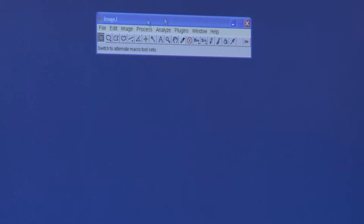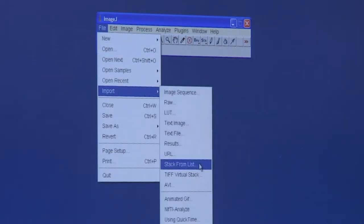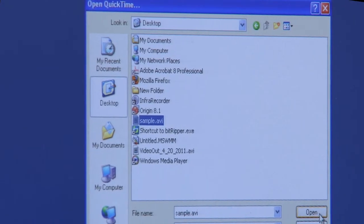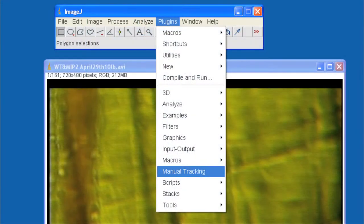To import the movie, open ImageJ again. Click File, Import, using QuickTime Movies plugin. Select the movie to be analyzed and click OK at the interface of QT Movie Opener. Click Plugins, Manual Tracking, to track cells.